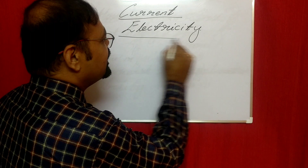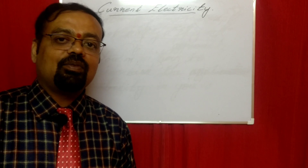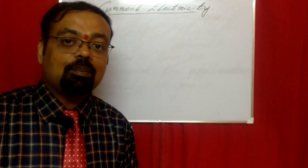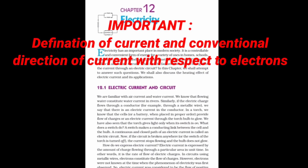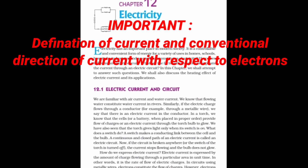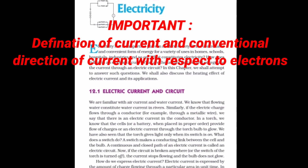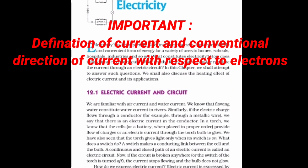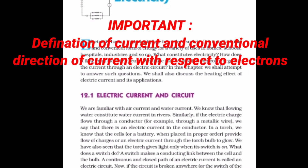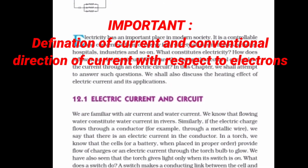The very first thing we have to do with the topic is read the chapter completely and make a list of subtopics. Let's begin with the chapter on electricity. The very first page gives you the introduction and begins with electric current and circuit. The only importance here is the definition of current and the conventional direction of current with respect to electrons.